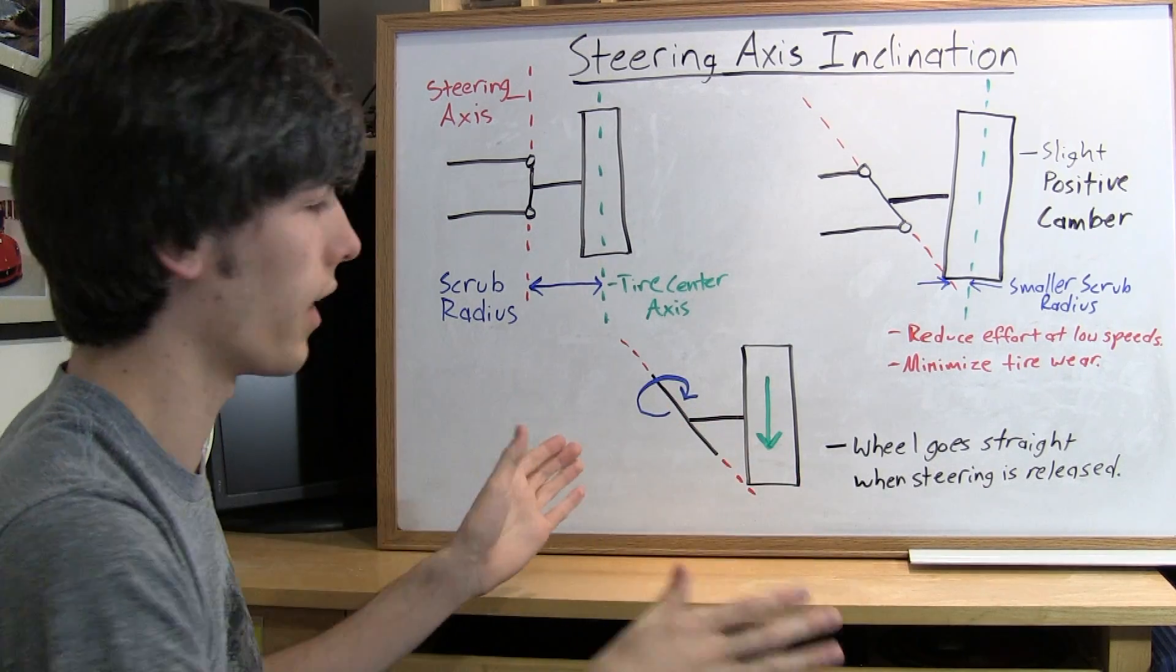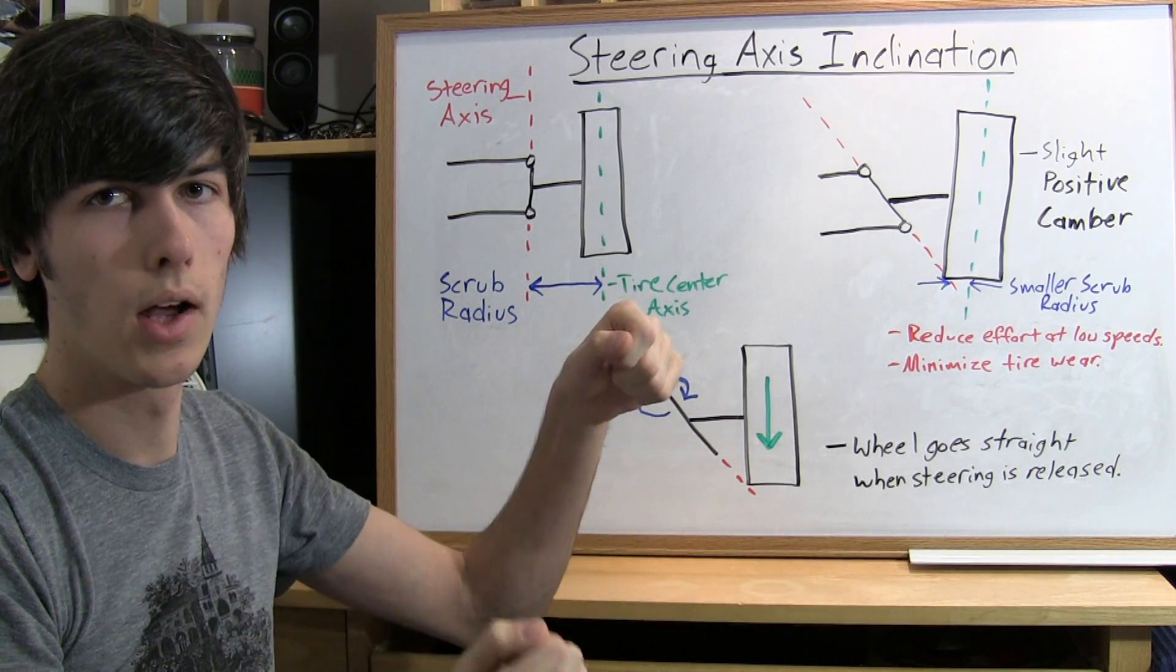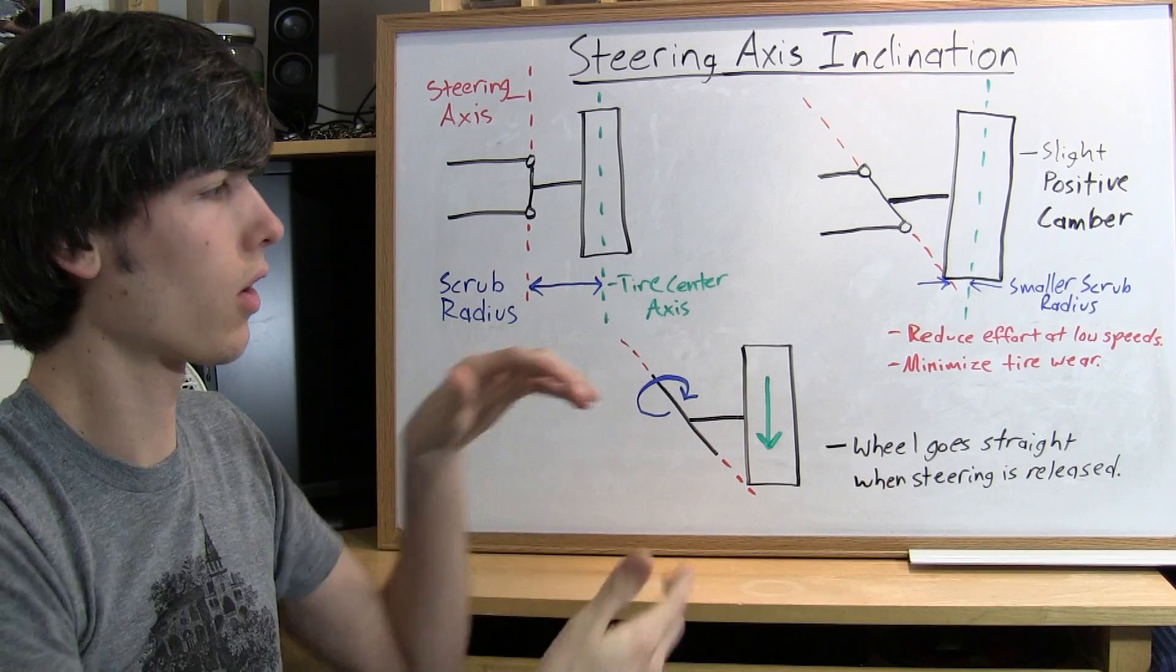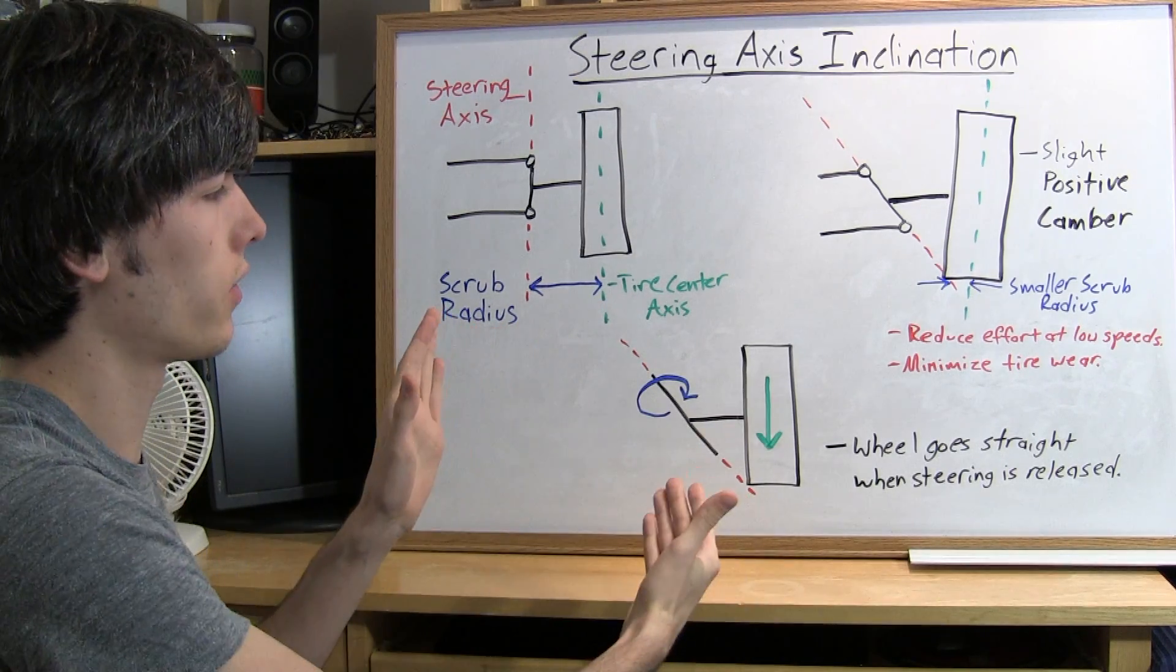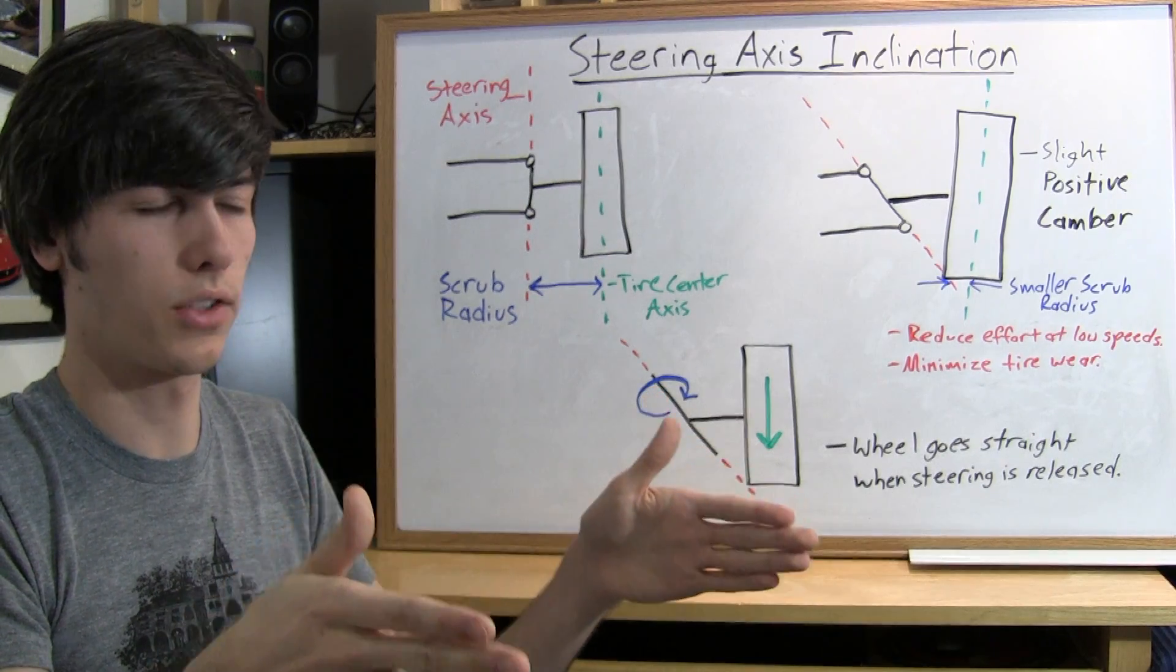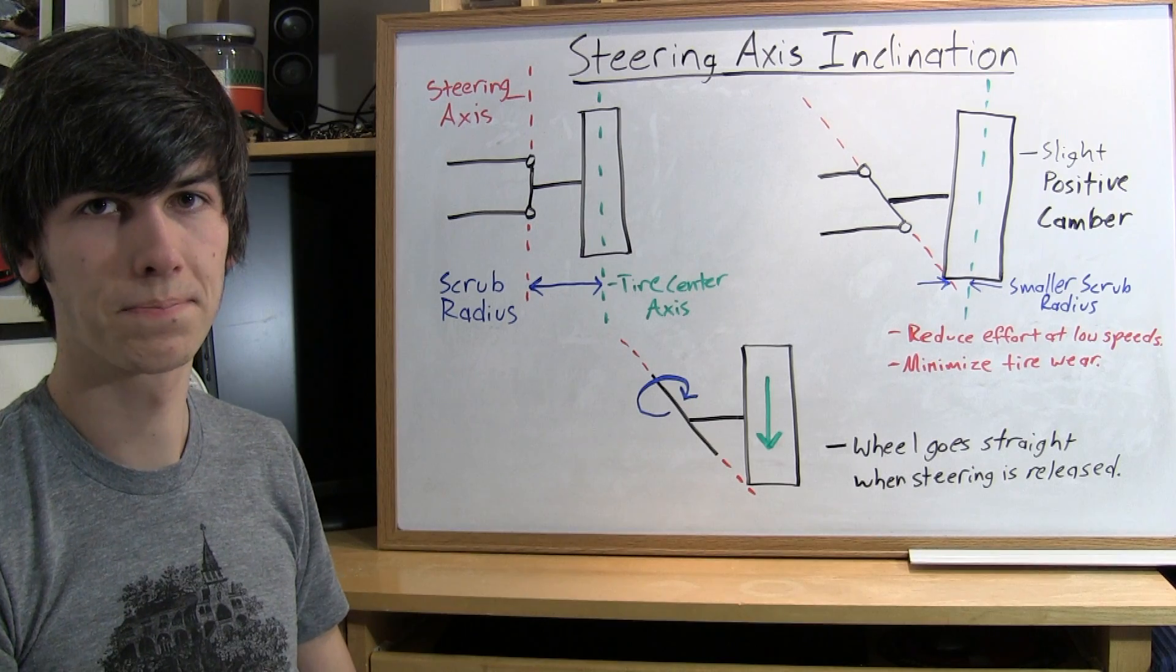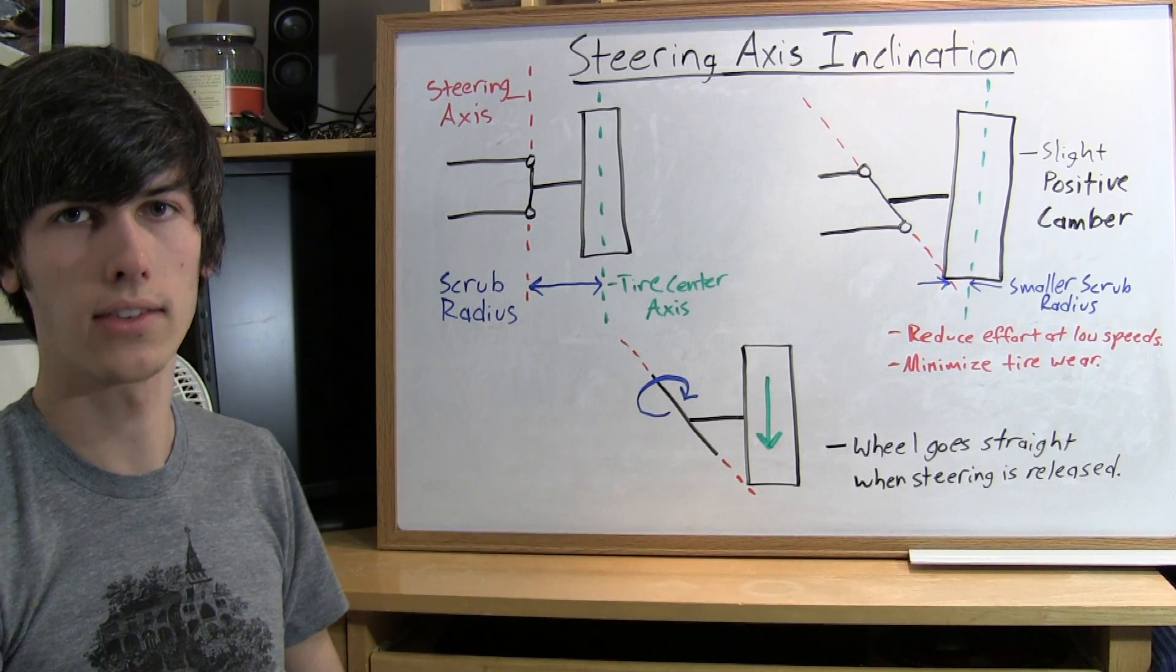Now what this does is because you have this resistance force when you turn when you let go of the steering wheel the car is going to want to go back to where there's less resistance so it's just going to go right back to straight ahead because of that steering axis inclination which is great because it keeps you going straight when you don't want to turn. And that's steering axis inclination.